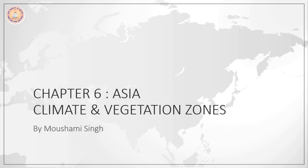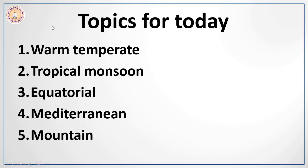Good morning students. Today we are going to continue where we left off last day, that is Asia climate and vegetation zones. In the last day we had learned about the vegetation and climatic zones of the northern part of the continent. Today we are going to concentrate on the eastern and southern part. Today's topics are warm temperate, tropical monsoon, equatorial, Mediterranean, and mountain.